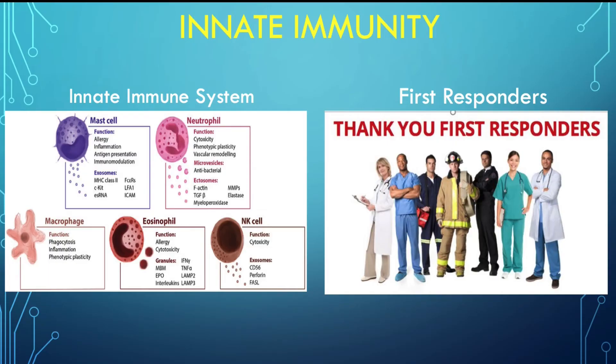In the next two slides, I will describe the innate and adaptive immune system in an understandable way. This slide describes the innate immune system. The diagram on the left shows several of the white blood cell types that make up this response, including the individual functions of each of the cell types.